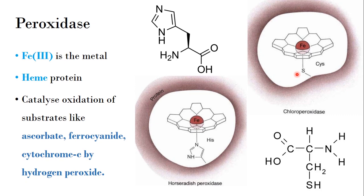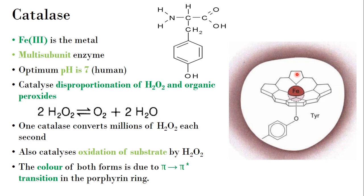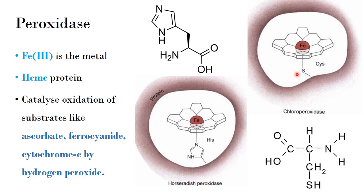Coming to peroxidase, everything has a similar structure — only the axial ligands present in the proximal site vary. Similarly, Fe is present in the +3 oxidation state surrounded by the porphyrin part, making it a heme protein. Two peroxidases are discussed here: horseradish peroxidase and chloroperoxidase — there are others like cytochrome c peroxidase as well.